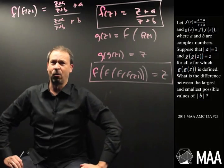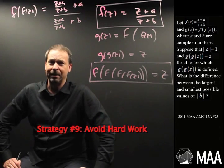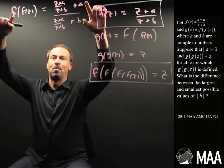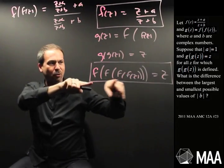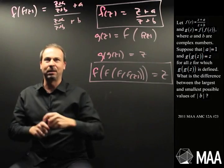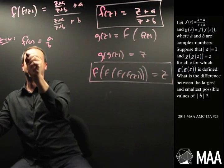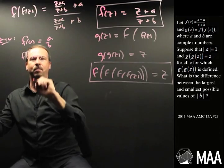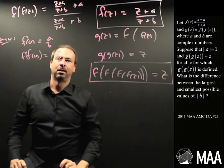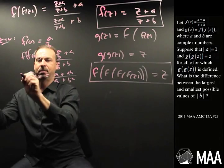I'm stuck here — this feels like horrible hard work ahead of me. So let me employ strategy number 9: avoid hard work. How can I avoid hard work? This is meant to be true for all values of z, so what's the easiest value to work with? Zero. Let's try z equals 0. f of 0 is just a over b. Then f of f of 0 means putting a over b into the formula, giving a over b plus a over a over b plus b. Multiplying through by b, that's a plus ab over a plus b squared.